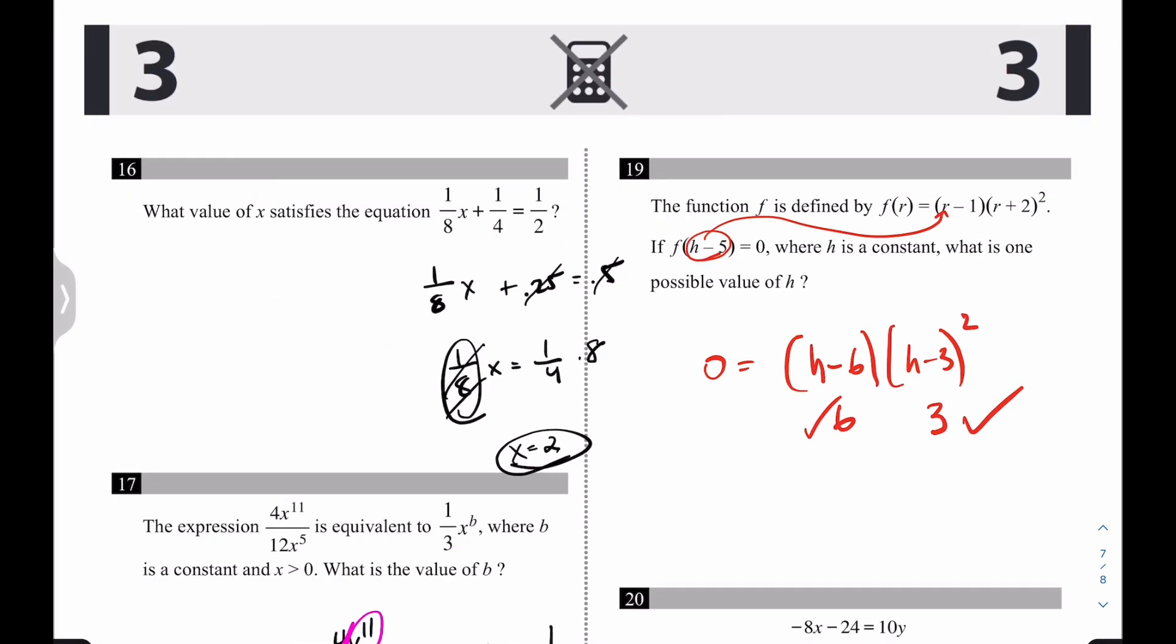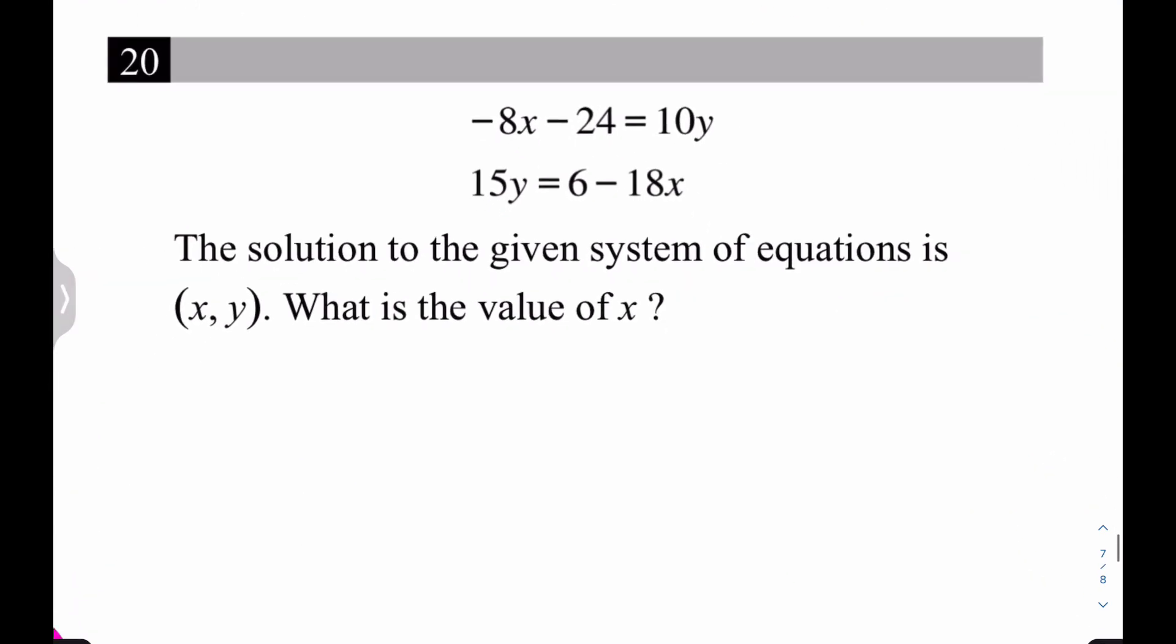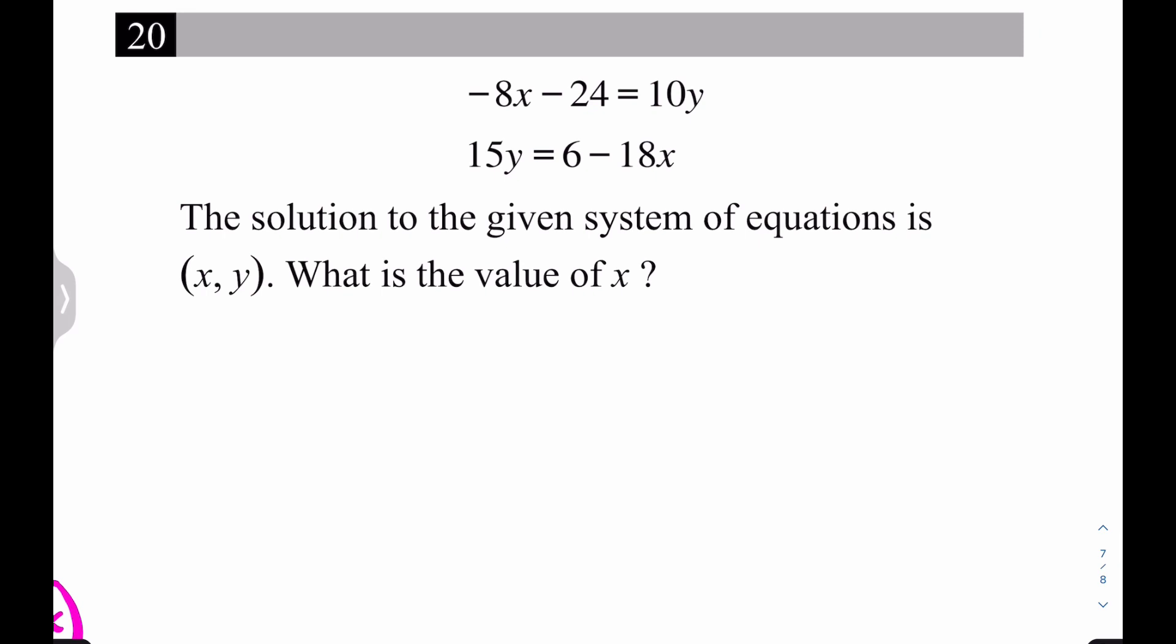All right. So that is good. Their last question. Wow. This is a really easy SAT. Excuse me. This is a system of equations. And how do you solve a system of equations? Well, there's a million different ways to do this, but I'm just going to get them all in order. It's really negative 8x minus 10y equals 24. And moving this over to the other side, I have 18x plus 15y equals 6.